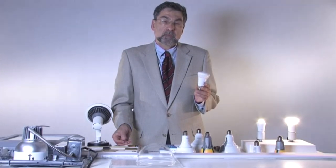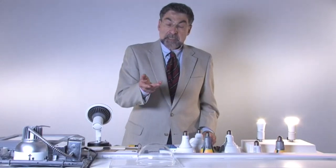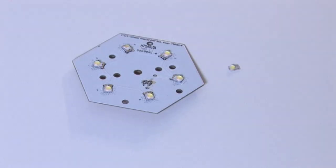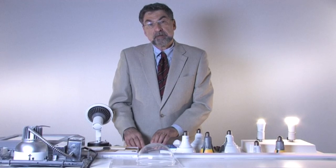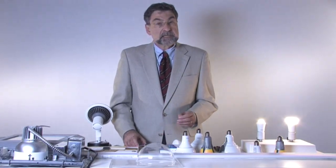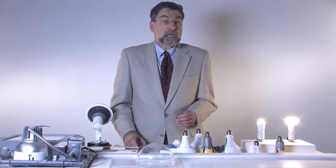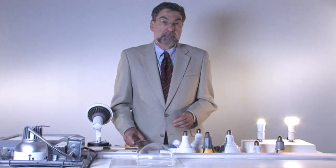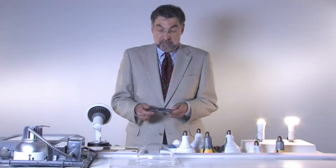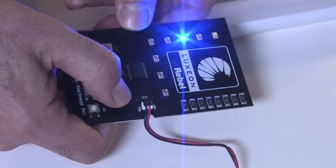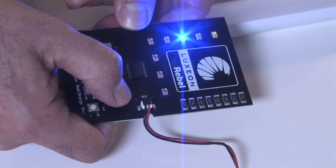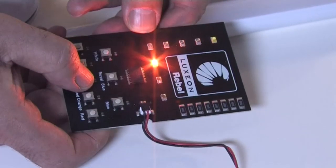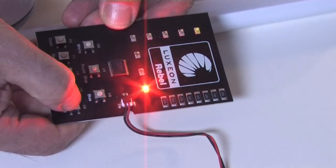Inside this LED replacement lamp are several small scale light emitting diodes. They're similar to the semiconductors inside your cell phone and computer, except that these semiconductors emit light when electricity passes through them. Depending on how they're made, the light can be blue, various colors, green, amber, orange, or red.